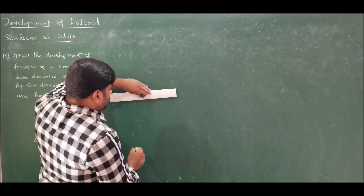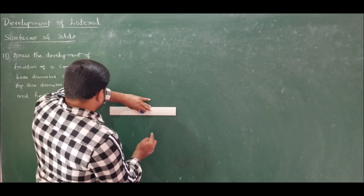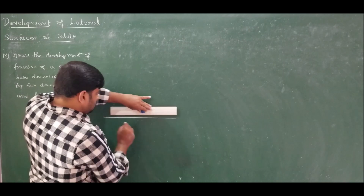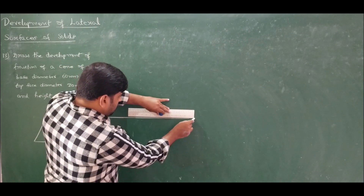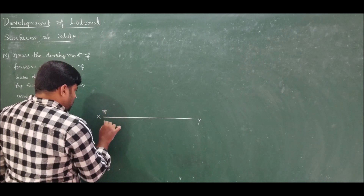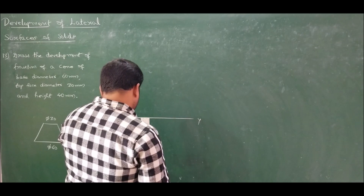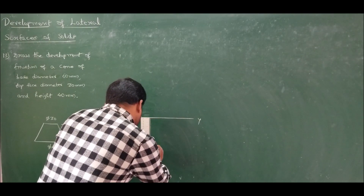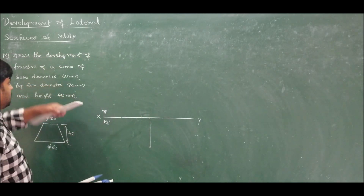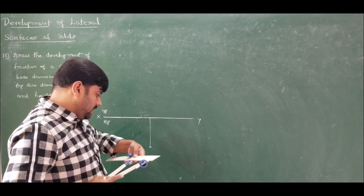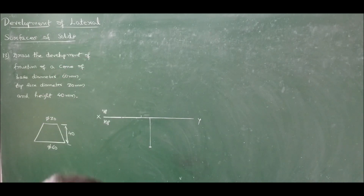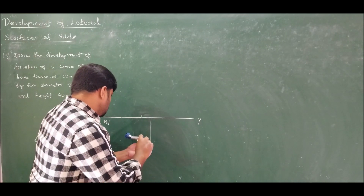First, let us draw the front and top view of the given problem. In the top view, we will get two circles. Let us call this X-Y line as VP and HP. First, draw the top view with a reference line and pick up the center. From this center, draw the base diameter of 60 mm, so the radius will be 30. Measure radius as 30 and draw a circle.